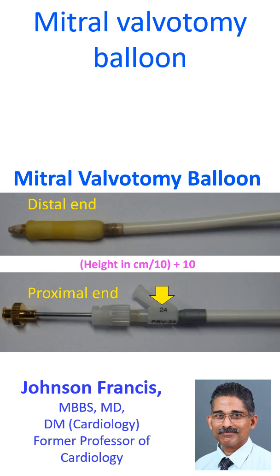Oversizing can increase the chance of mitral regurgitation. Undersizing may reduce the likelihood of good splitting of the fused commissures of the mitral valve.